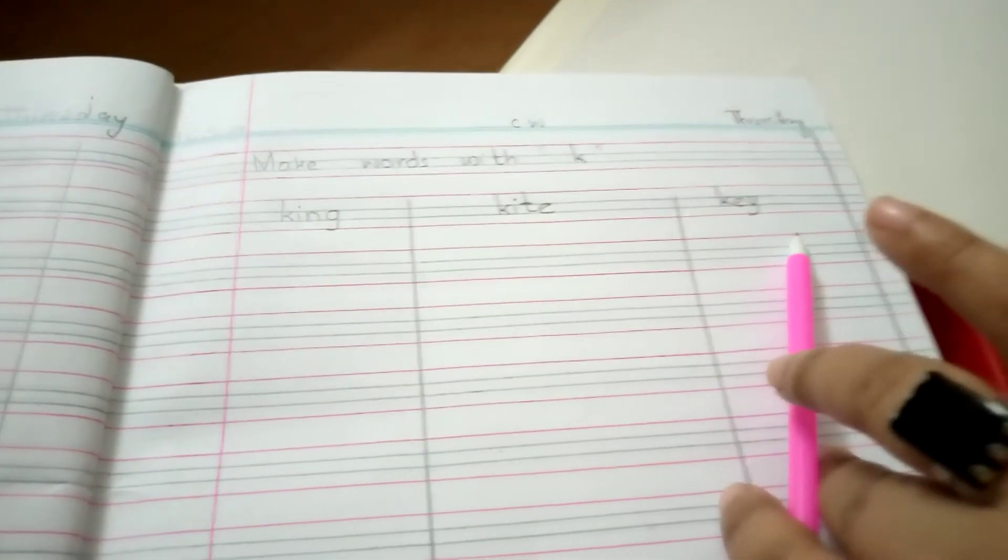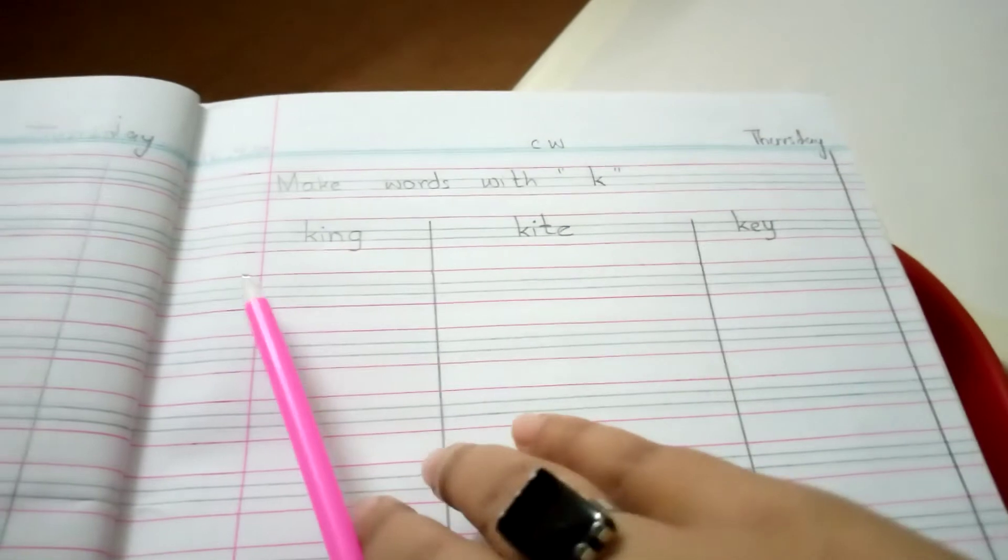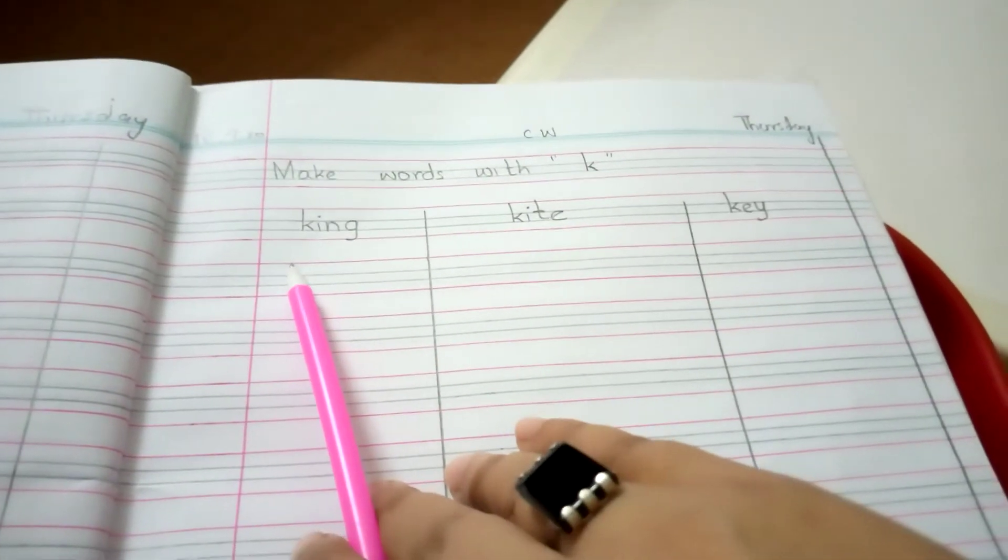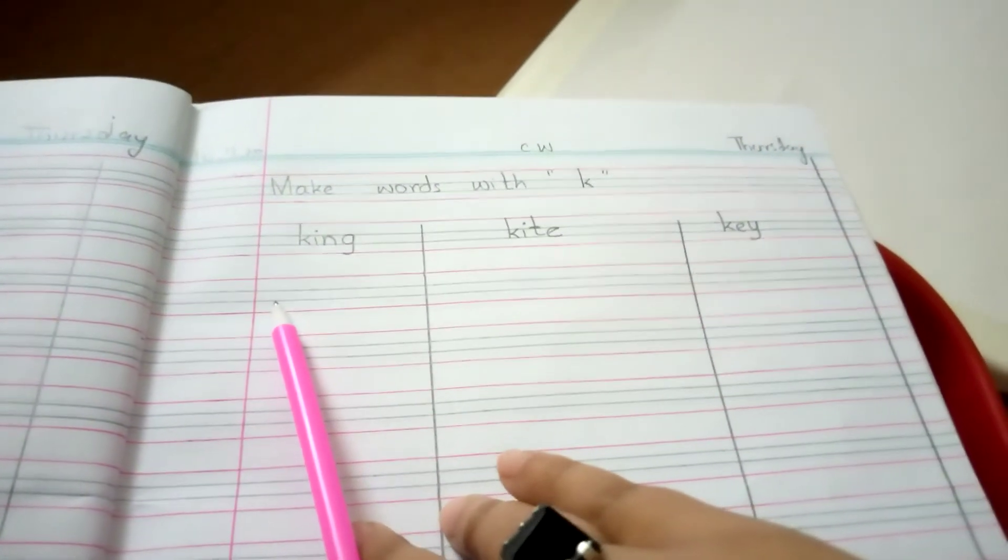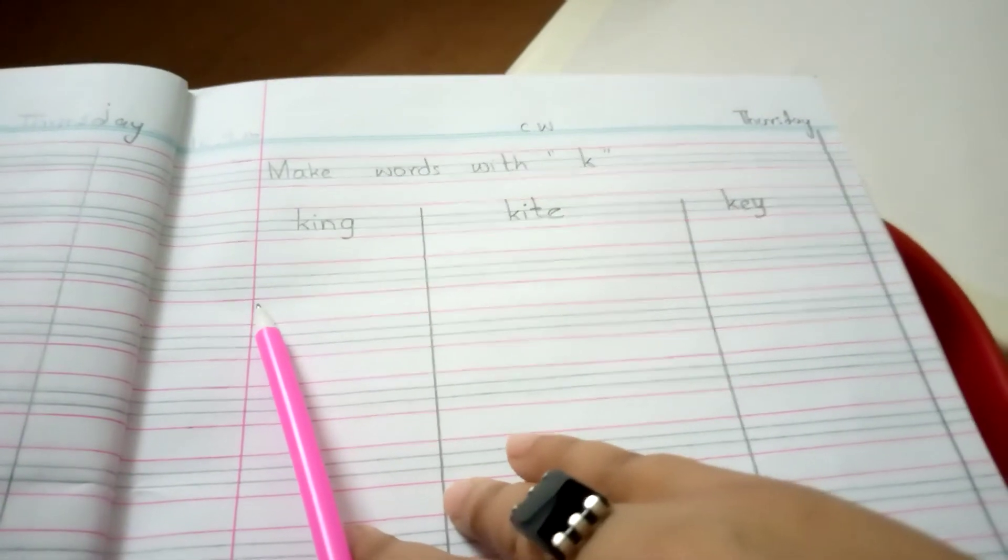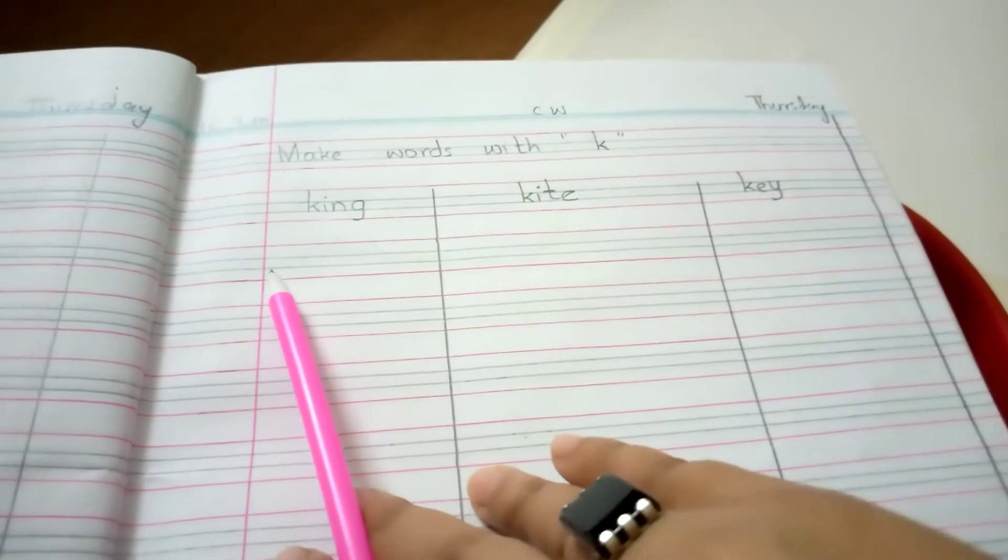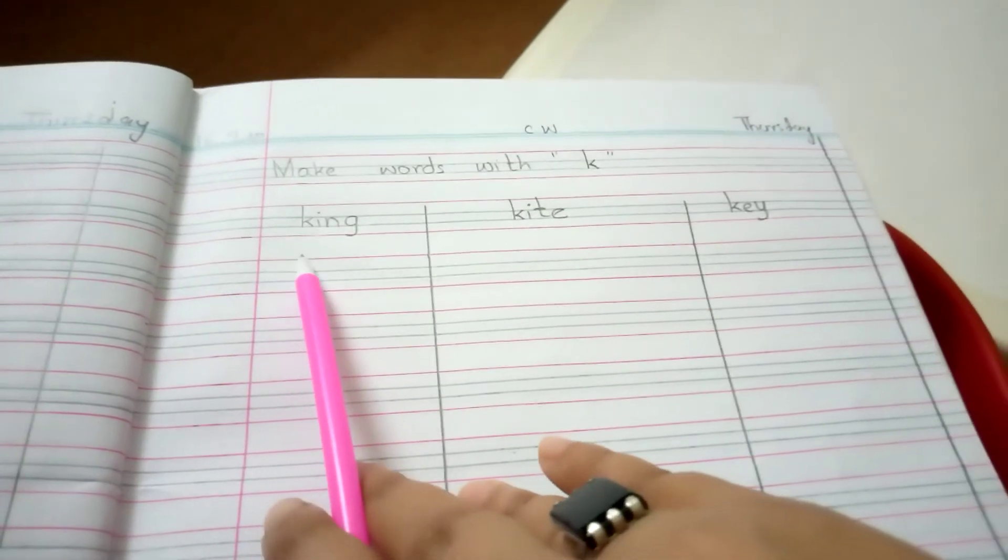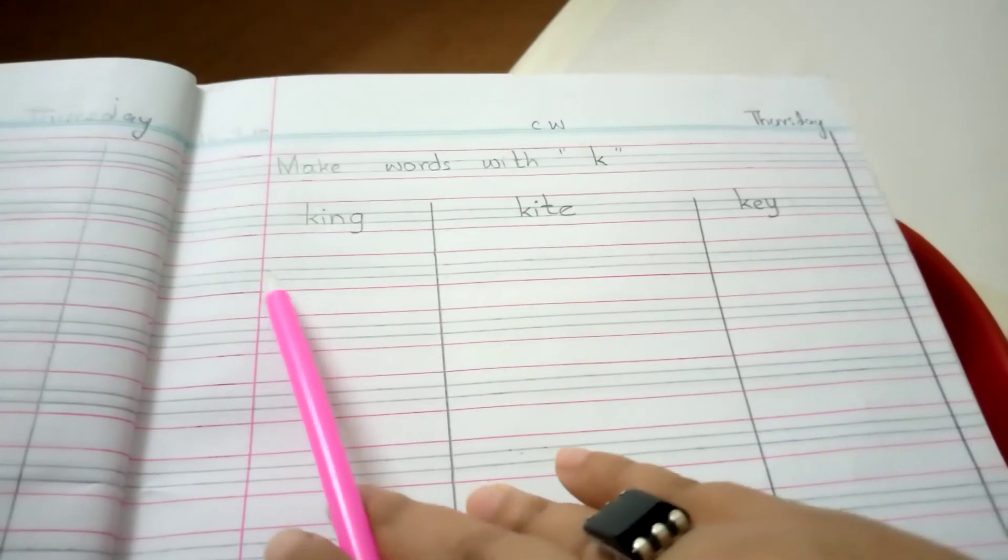When you are writing this, be careful about the lines. Remember, this is the skyline. These are the grass lines. And this is the root line. Skyline, grass lines, and the root line.